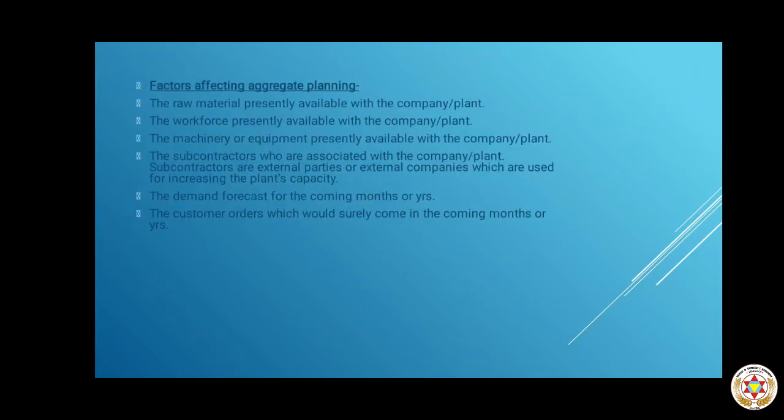Now, what are the factors considered while making the aggregate plan? The first factor is the raw material presently available with the company or plant. Whatever raw material is currently available, we look at it and plan how much more will be needed in the future. For example, if we need 1000 kg of raw material for the coming year and we already have 200 kg, then we make an aggregate plan for the remaining 800 kg.